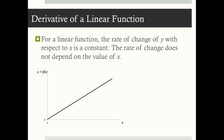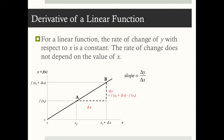For a linear function, the rate of change of y with respect to x is a constant — the rate of change does not depend on the value of x. We already know that the slope of a line is calculated as the change in y over the change in x, and we can choose any two points to calculate the slope. Using general notation, I'll calculate the slope between point x₀ with corresponding y value f(x₀), and x₀ plus Δx with corresponding value f(x₀ + Δx). The difference in x is Δx, and the difference in y is Δy, which equals f(x₀ + Δx) minus f(x₀).